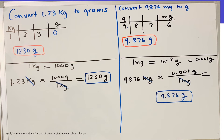This can also be solved using dimensional analysis. If you want to learn more about dimensional analysis, check the link for that video in the description box. With dimensional analysis, we will need the conversion factor 1 kilogram equals 1,000 grams. That gives us 1.23 kilograms times 1,000 grams over 1 kilogram. The kilograms cancel out, and your final answer is 1,230 grams.